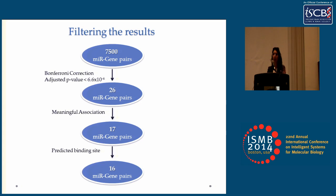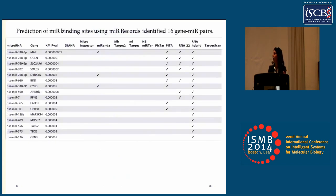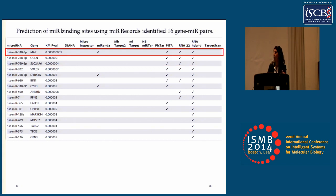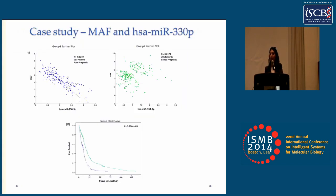We started with 7,500 pairs and ended up with 16. This is the identified list with corresponding Kaplan-Meier p-values. The most significant pair is MAF and microRNA-330. Our method identified that a strong negative correlation between MAF and the microRNA, with an R-score of -0.82, is associated with significantly lower survival rates, while a lack of correlation is associated with higher survival rates — indicating this pair correlates with a more aggressive form of the tumor.